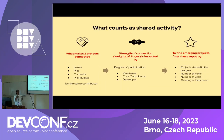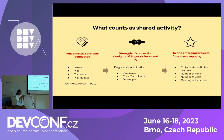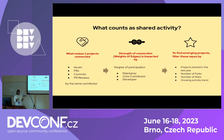What exactly counts as shared activities — the edge weights between different nodes? We count activities like issues, PRs, commits, and PR reviews. The weight is defined by the strength of the connection based on those types of contributions — for example, whether contributions are done by a maintainer or a core developer. We also look at metrics for a particular project, like number of forks, number of stars, and the activity trend over time for a project.